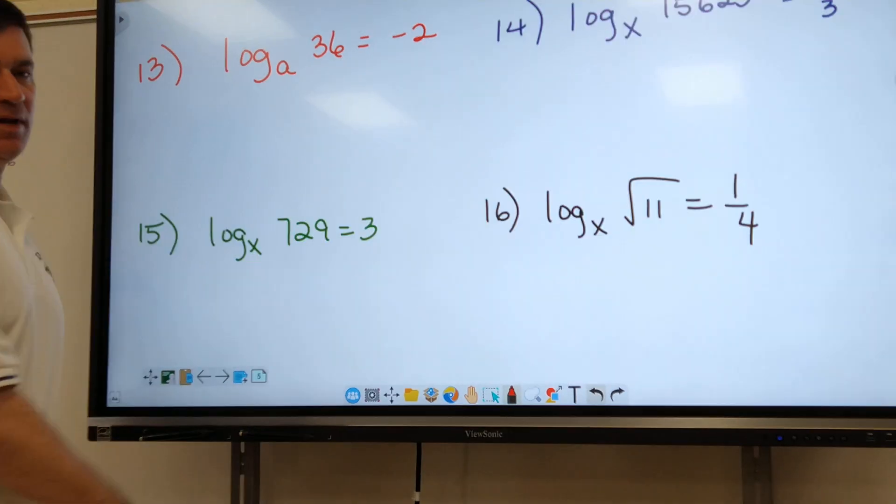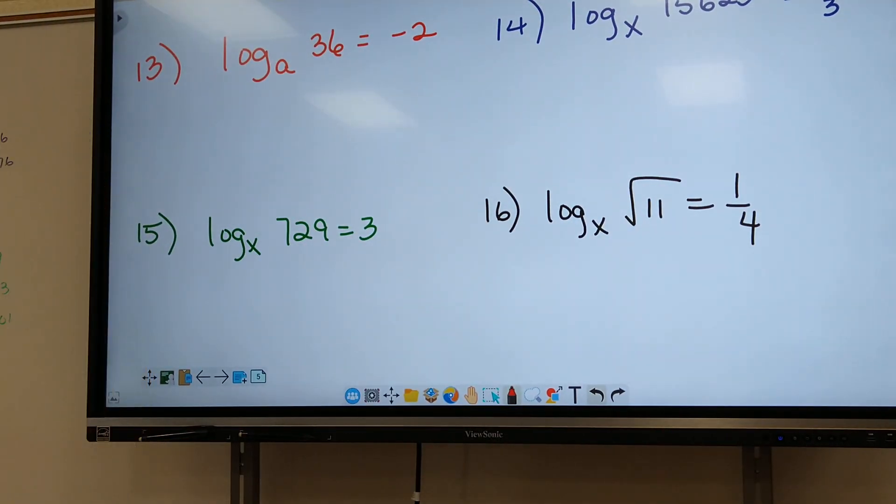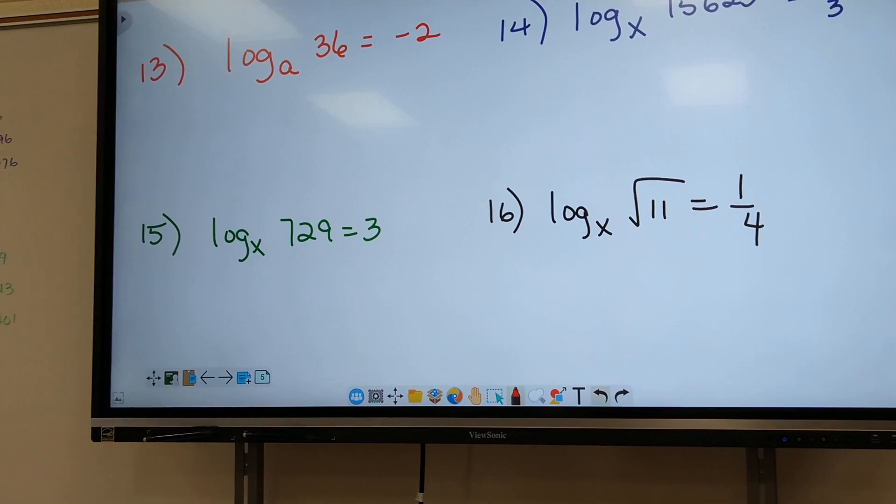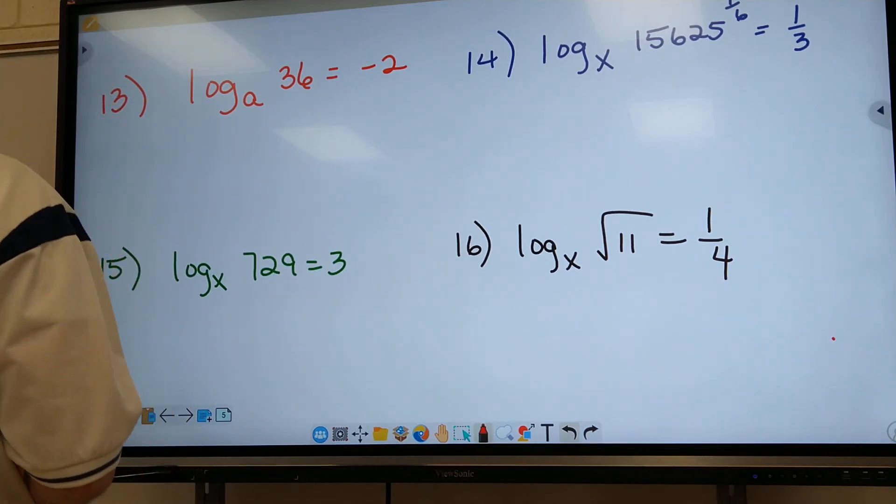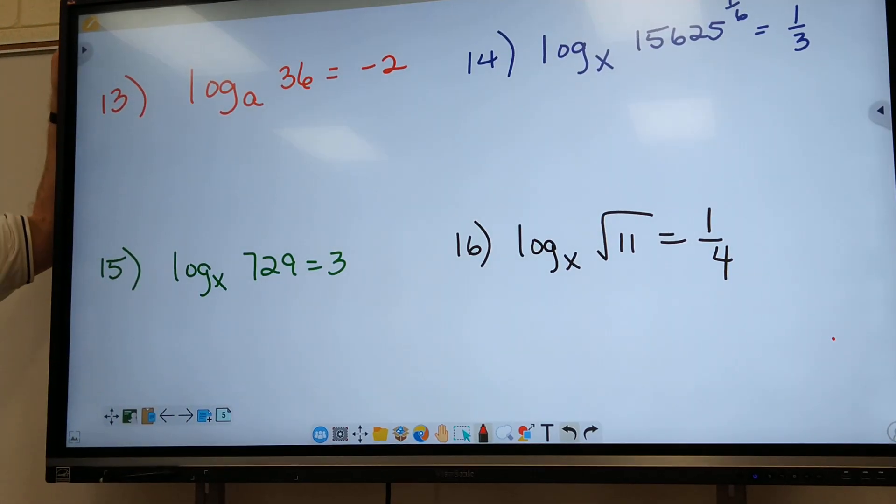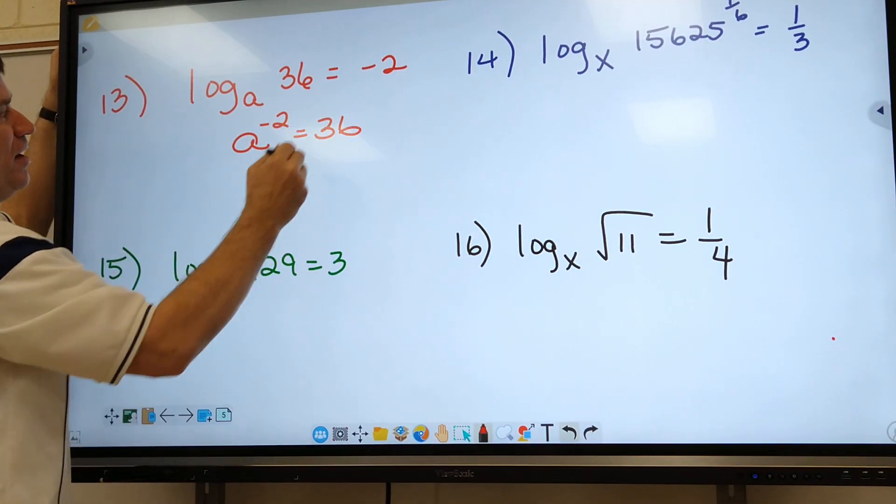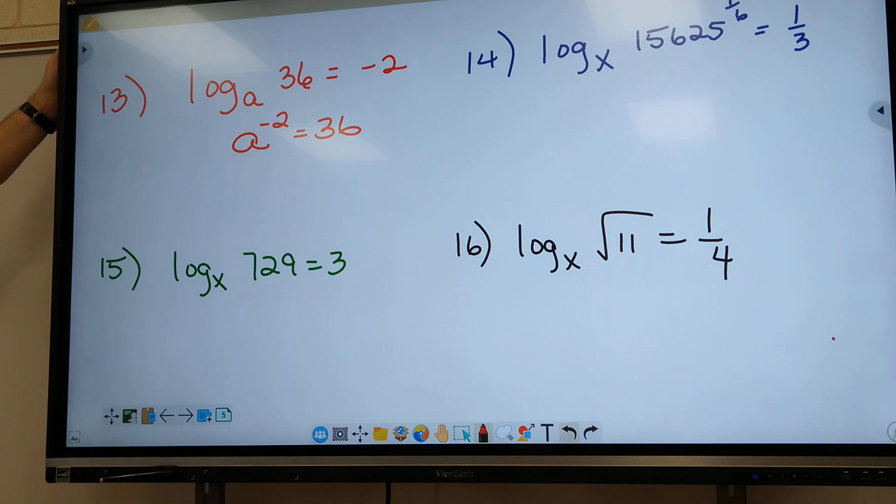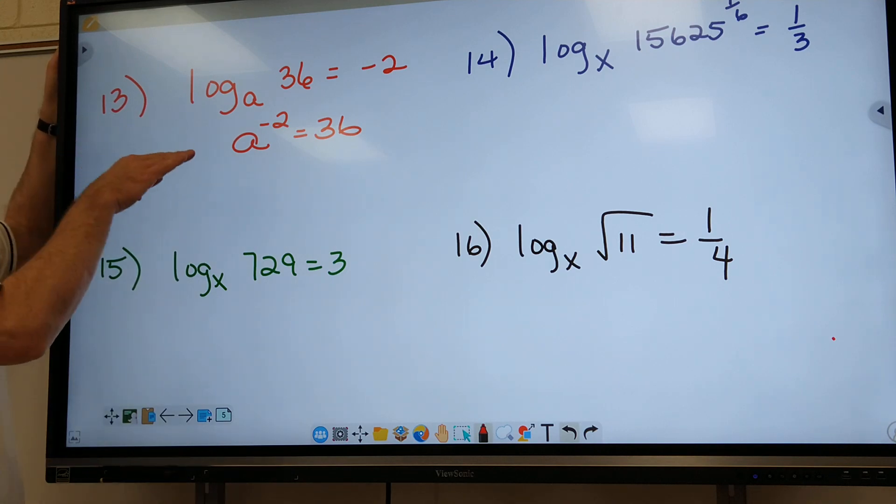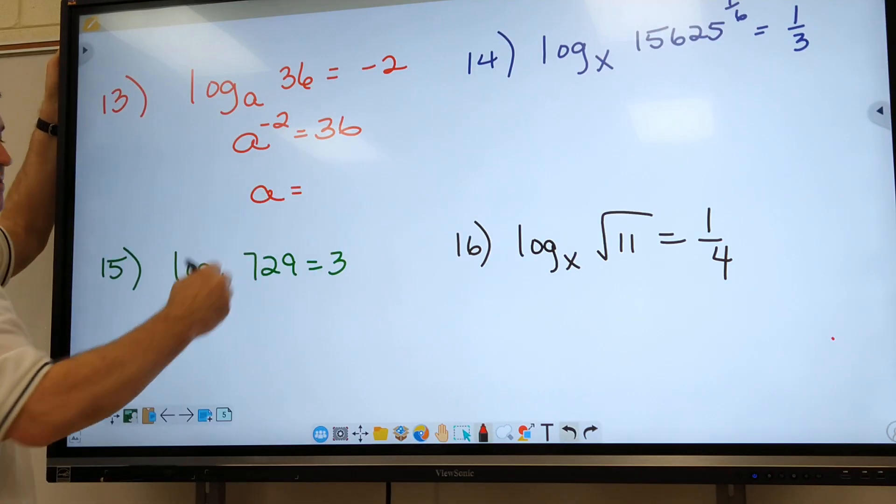All right, write down these four. They're going to be a little bit different. All right, so first step, let's set it up. How are we going to set this one up? Good, Matthew. A to the negative second equals 36. All right, you need to write that step down. Now, we have got to get an answer on this. To solve this equation, we have got to get a by itself. You guys agree?